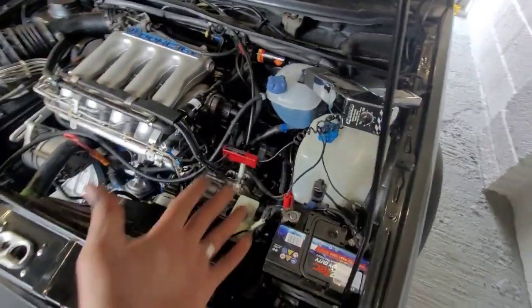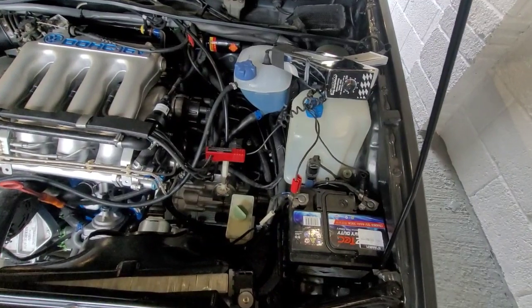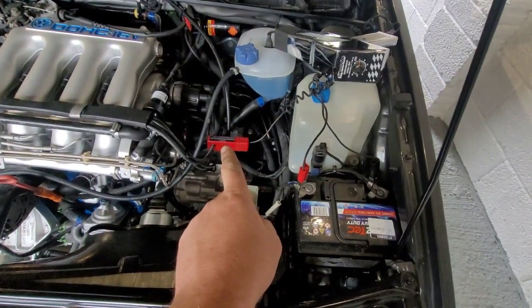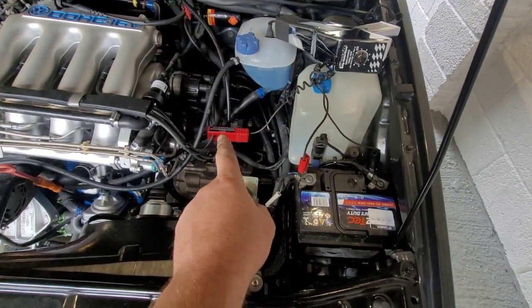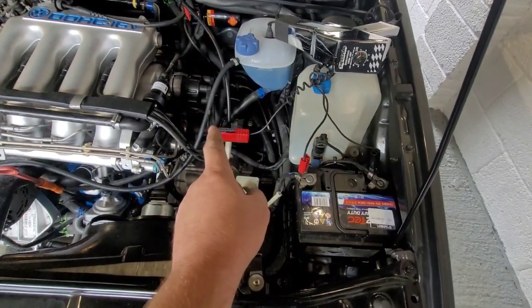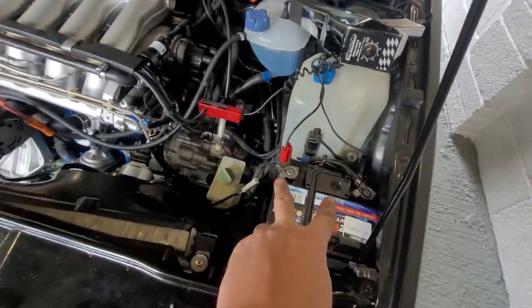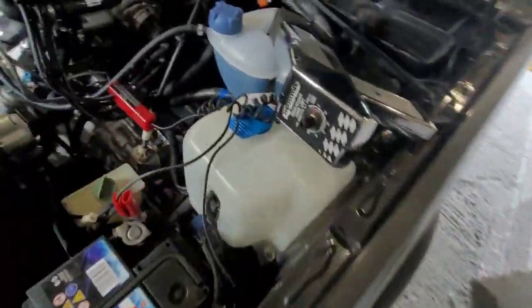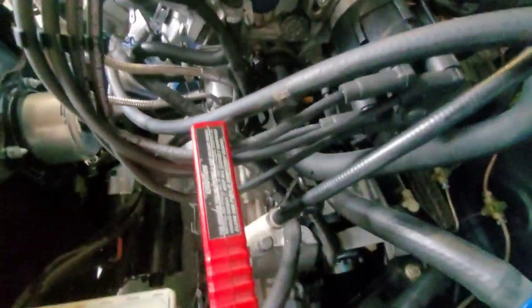So what we've got here is an old school timing light. It clips onto number one lead. Every time a spark goes down number one, or number one has been told to spark, that sends a signal to that and that lights up.